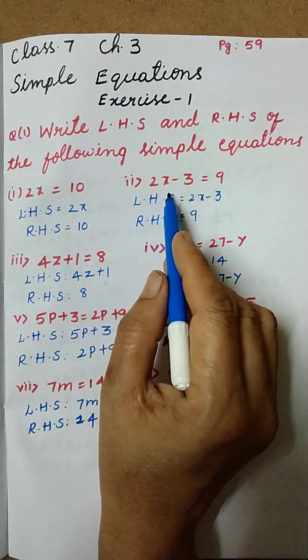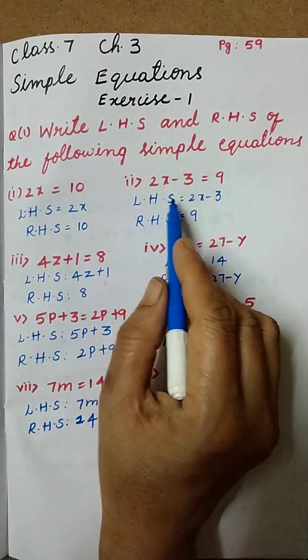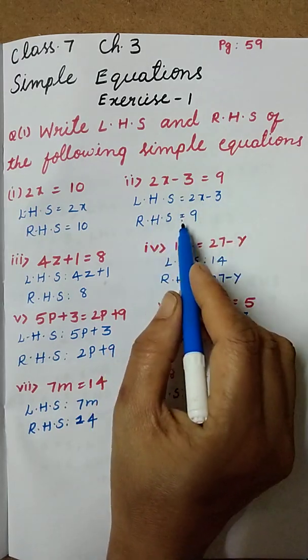Next question: 2x minus 3 equal to 9. Here LHS is 2x minus 3 and RHS is 9.